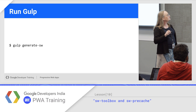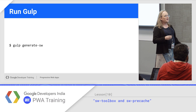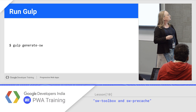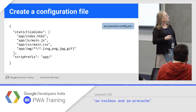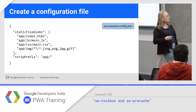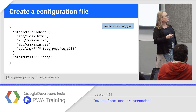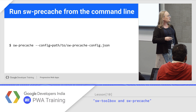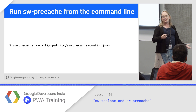Run, and then call Generate SW for Gulp. From the command line, you could do the same thing — except instead of writing a Gulp file, you write a JSON configuration file that lists what you need, and then just call it from the command line with a pointer to the config file. Easy.